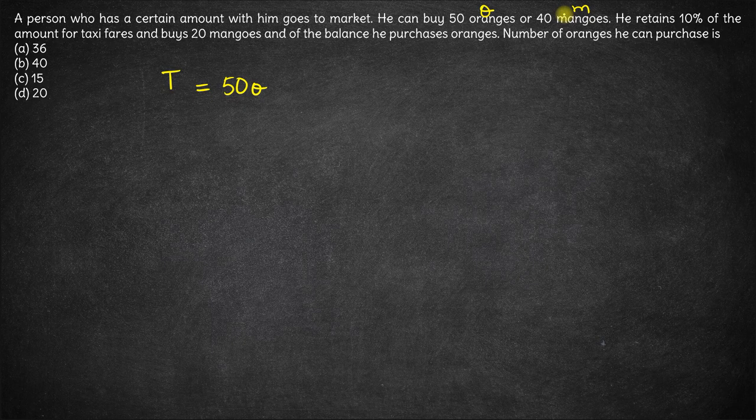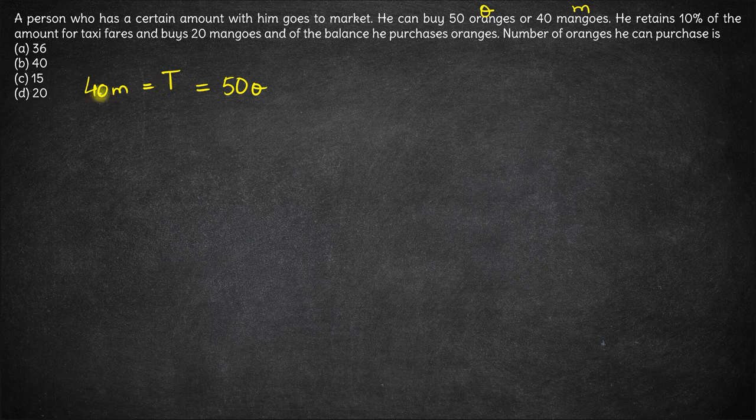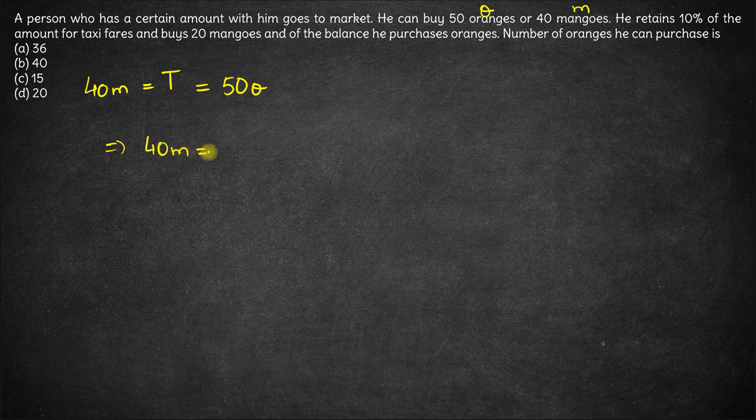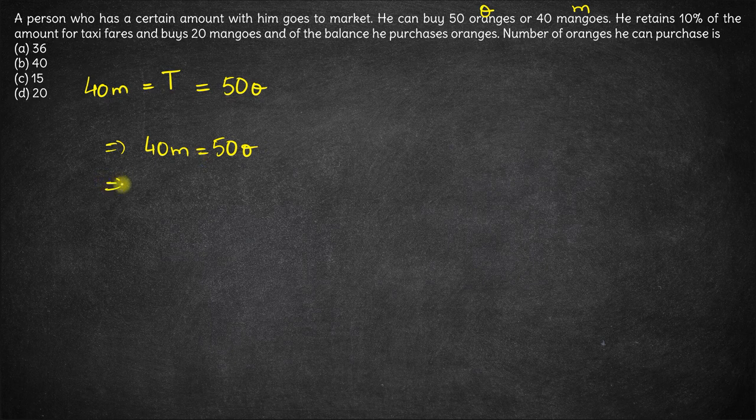Similarly, if the cost of one mango is M, the cost of 40 mangoes will be 40 into M. So the total amount will be 40M. T should be equal to this or this. What we effectively have is 40M equals T which equals 50O. So 40M equals 50O.